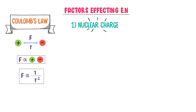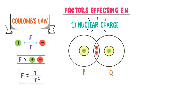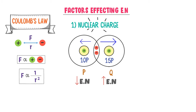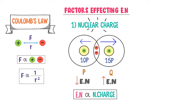The first factor is nuclear charge. Consider two atoms, P and Q. Let them share one pair of electrons to form a covalent bond. Let there be 10 protons in atom P and 15 protons in atom Q. Which atom is more electronegative? According to Coulomb's law, attractive force is directly proportional to the size of charges. The nuclear charge of Q atom is 15 and that of P is 10, so Q atom strongly attracts the shared pair of electrons. Thus, Q atom is more electronegative, and P atom is less electronegative. Therefore, electronegativity is directly proportional to nuclear charge, or the number of protons in the nucleus.